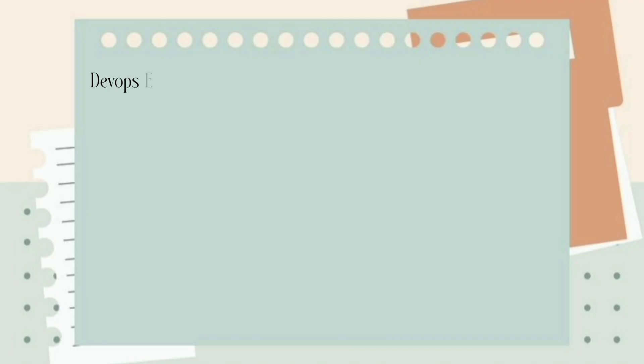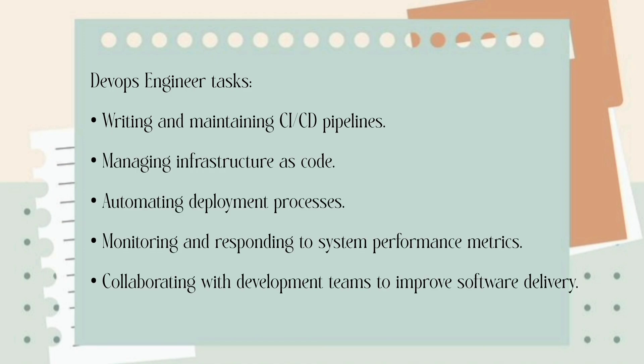Let's get into what a typical day looks like for a DevOps engineer and an SRE. While there is some overlap, the focus and responsibilities can be quite different. A DevOps engineer's day often includes tasks like writing and maintaining CI/CD pipelines, managing infrastructure as code, automating deployment processes, monitoring and responding to system performance metrics, and collaborating with development teams to improve software delivery. DevOps engineers are like the glue that holds development and operations teams together, working closely with development teams to ensure code is ready for production and that deployments are smooth and efficient.